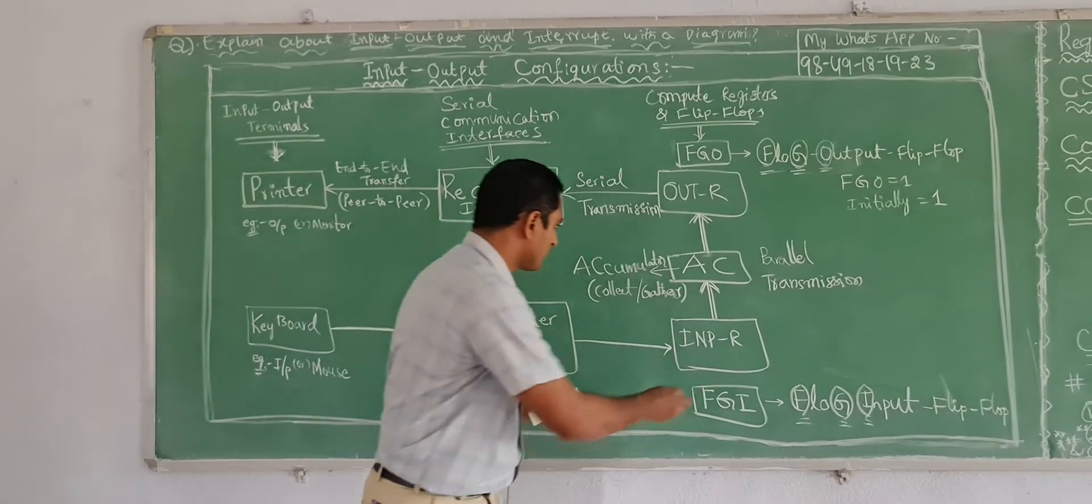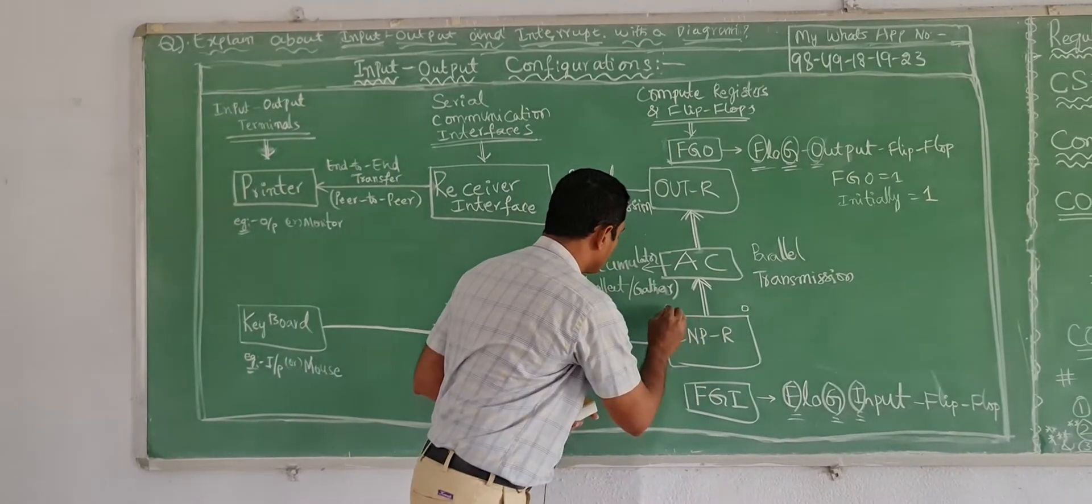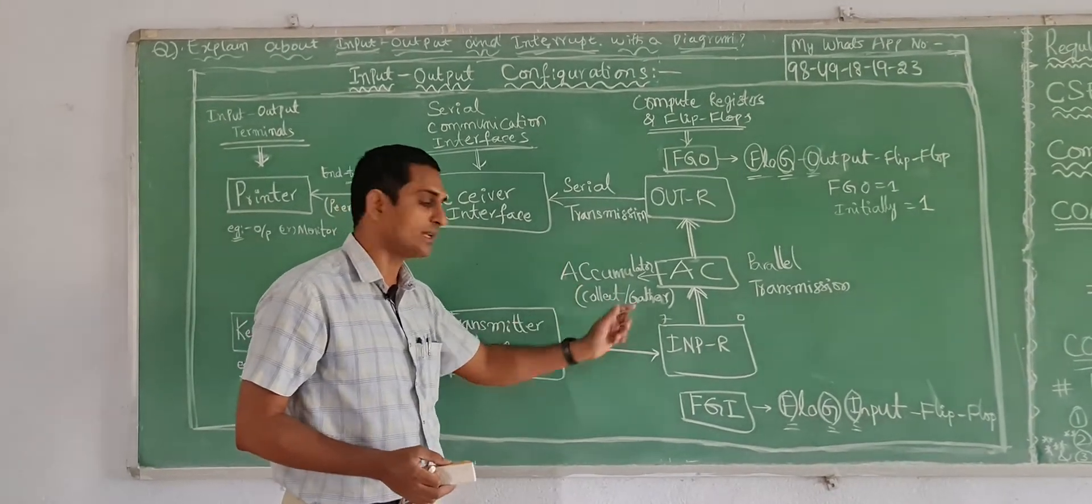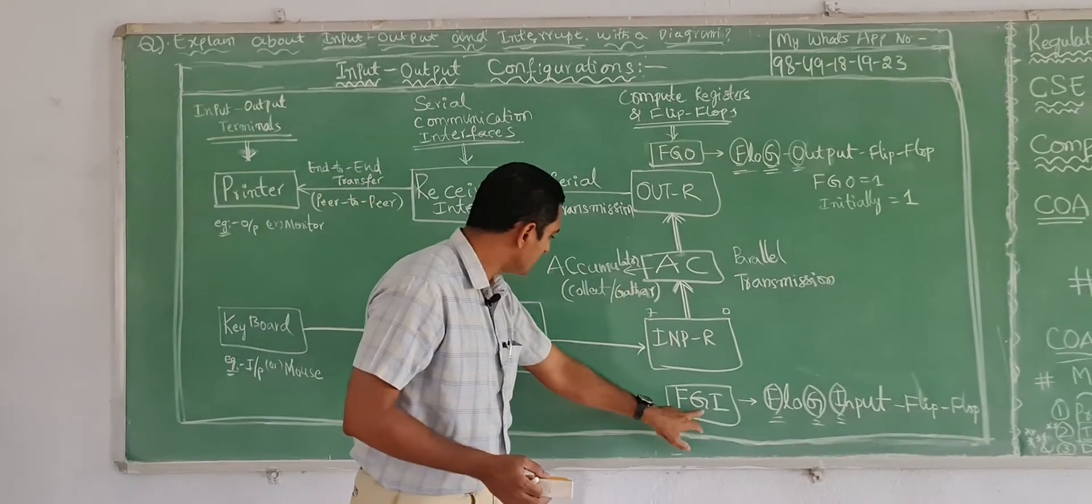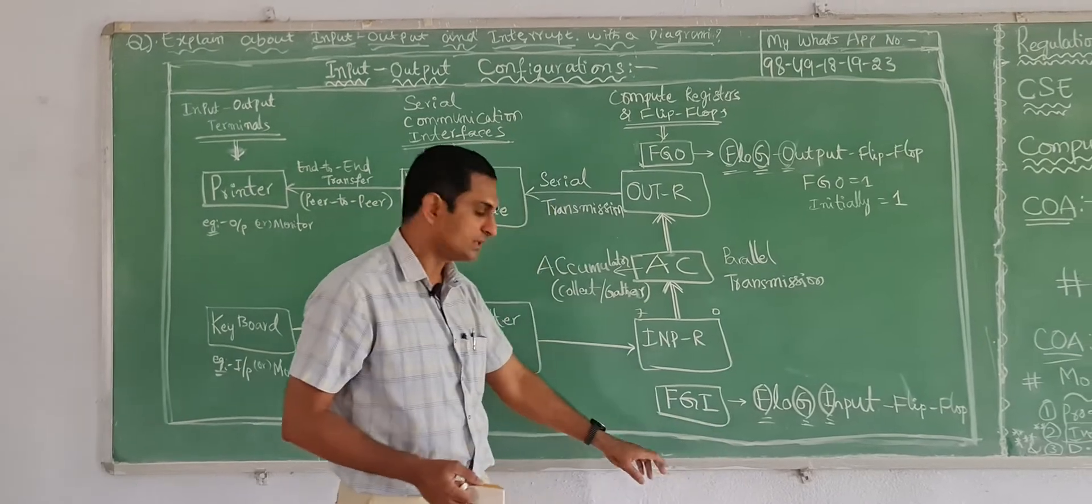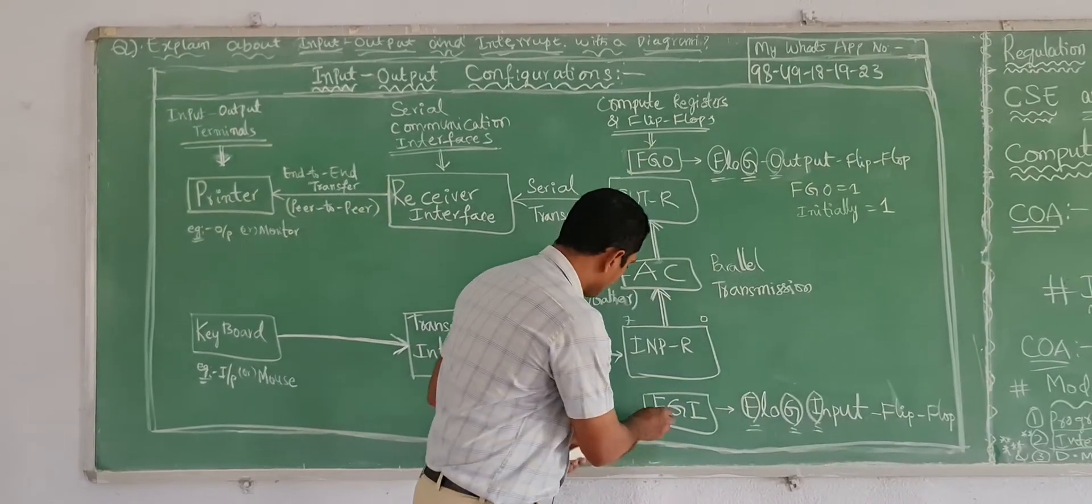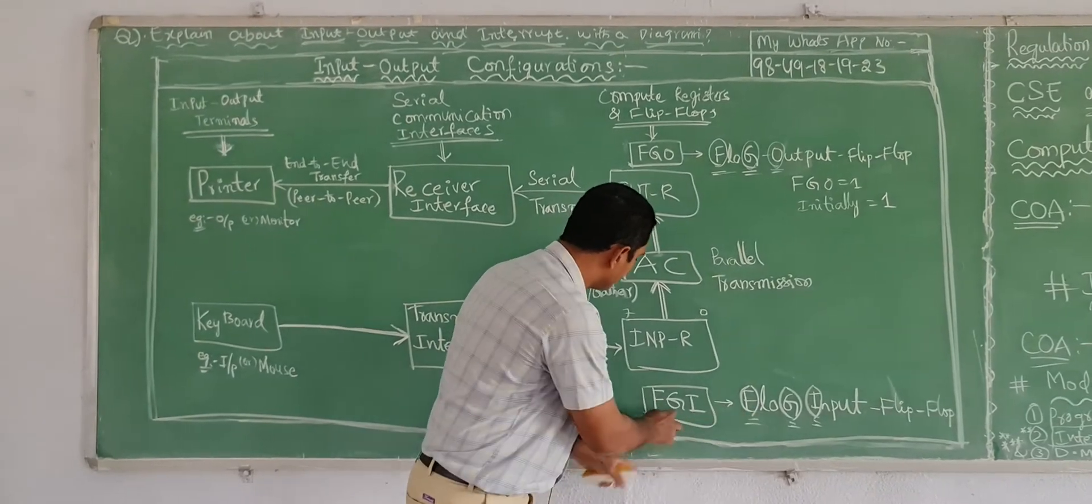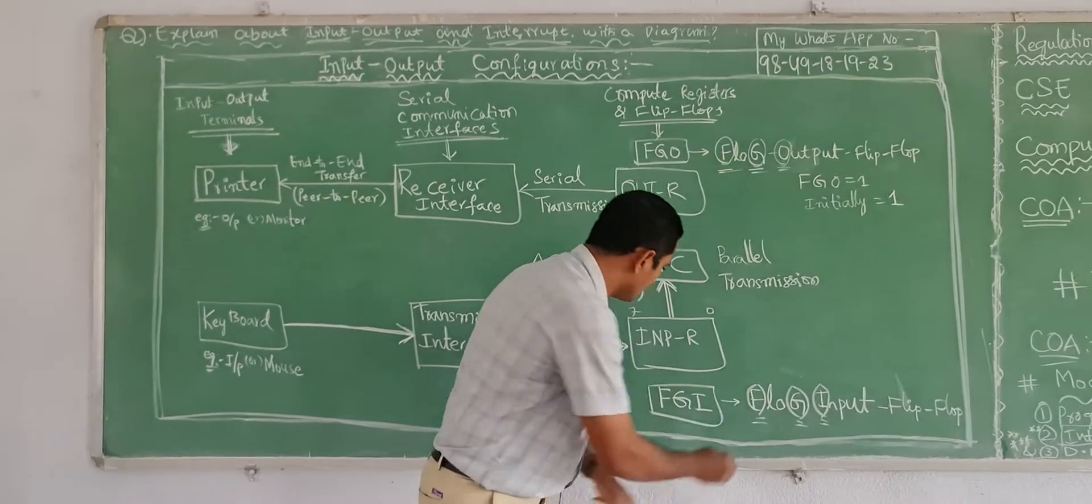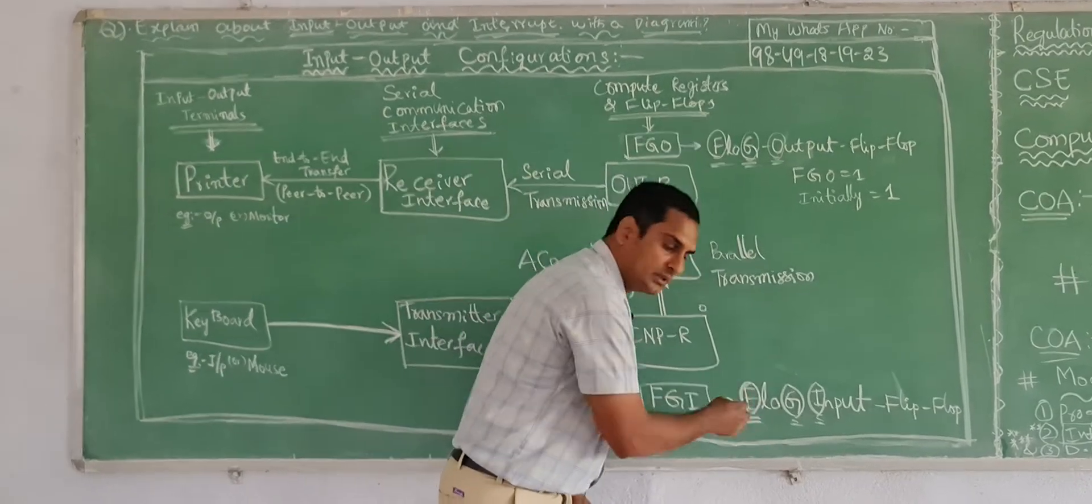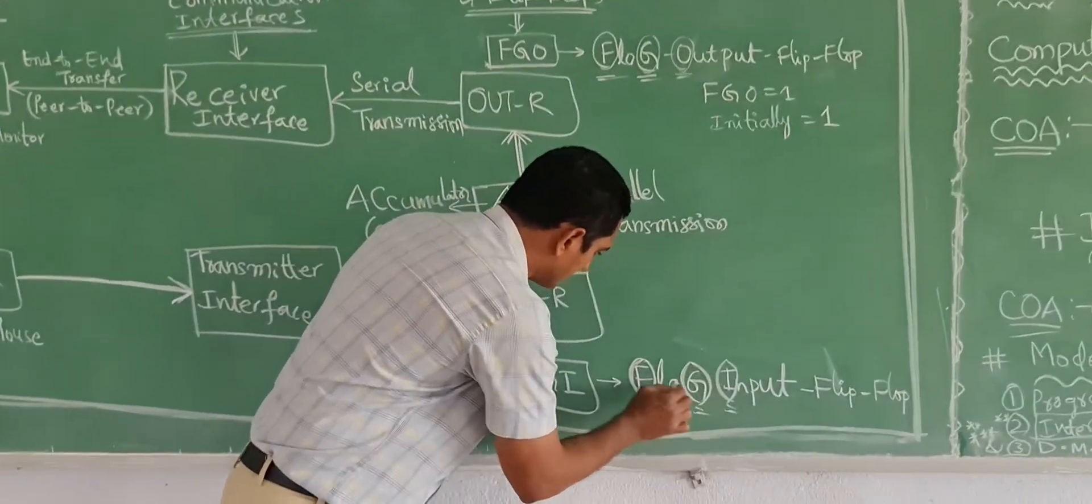In our previous diagram also, we have learned registers 0 to 7, means 8-bit input register will be there, the character will store. If it is FGI, this is a flip flop, flag input flip flop.